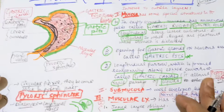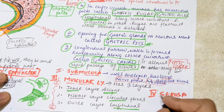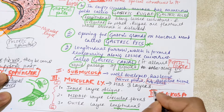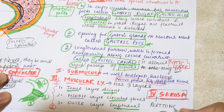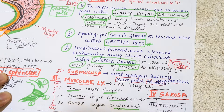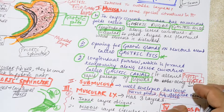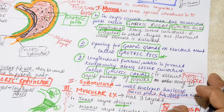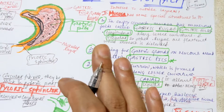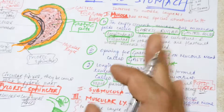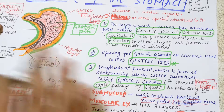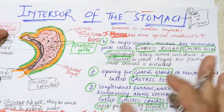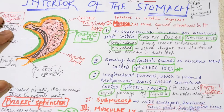The fourth and outermost layer is the serosa — the peritoneal covering. The stomach has an intraperitoneal covering as discussed in the peritoneum video. That completes the interior of the stomach. For blood supply, watch the earlier video linked in the eye button. Thank you, do like, share, and subscribe.